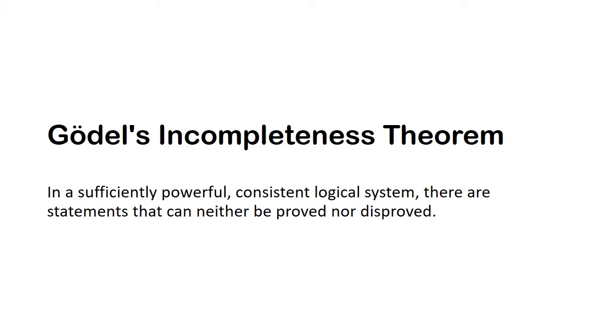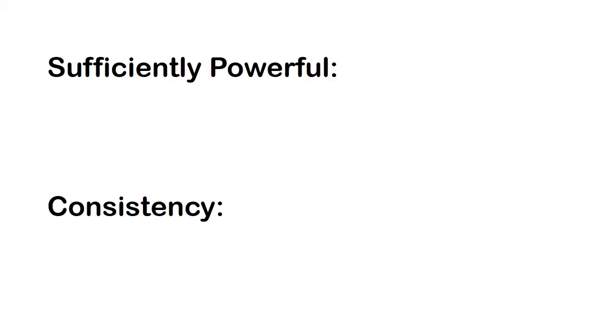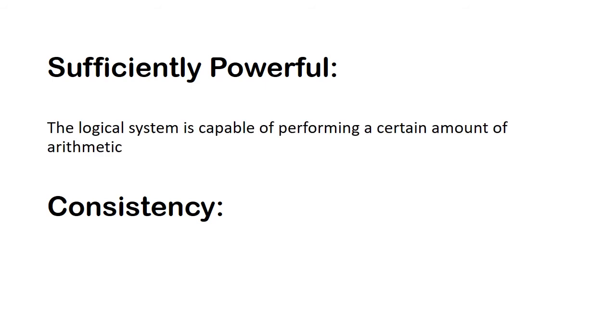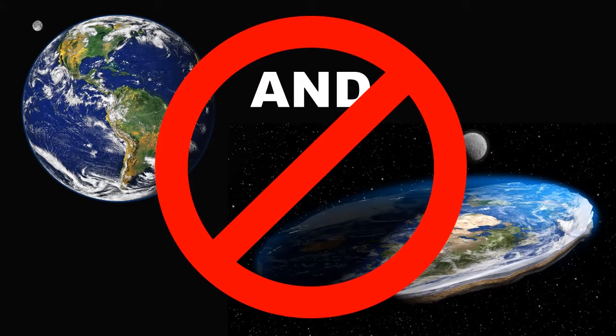To start off, by sufficiently powerful we mean the logical system can carry out a certain amount of arithmetical operations, and by consistent we mean it is impossible to prove both a statement and its opposite in the logical system. For example, we can't prove both earth is round and earth is flat using a consistent logical system.